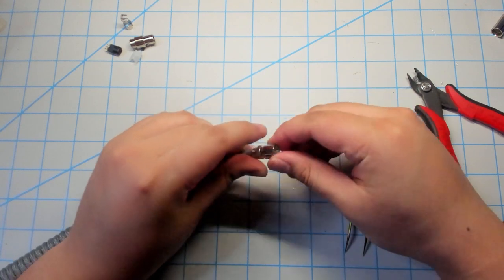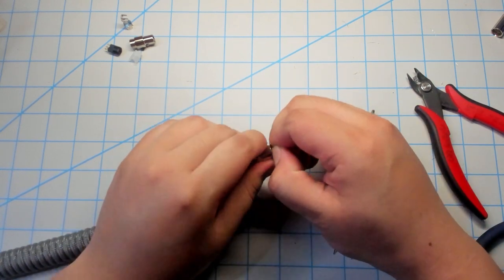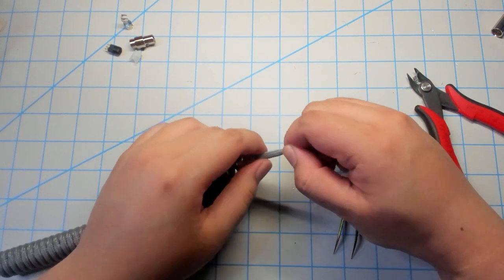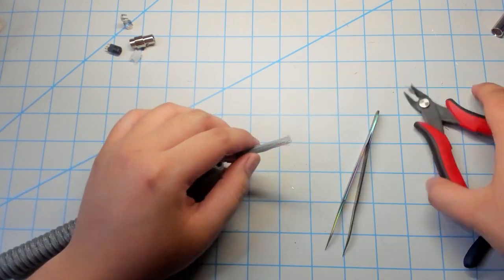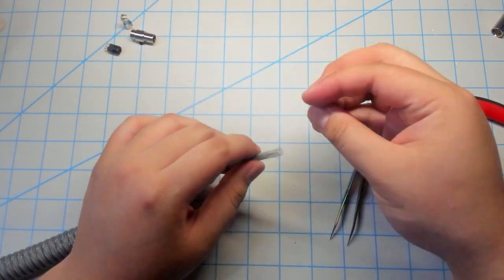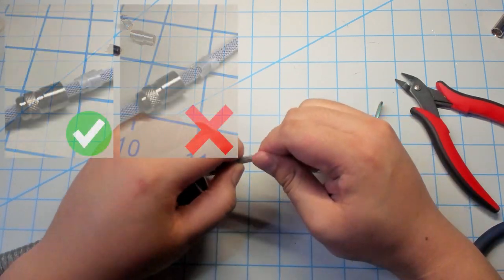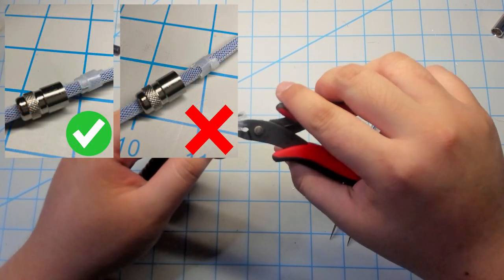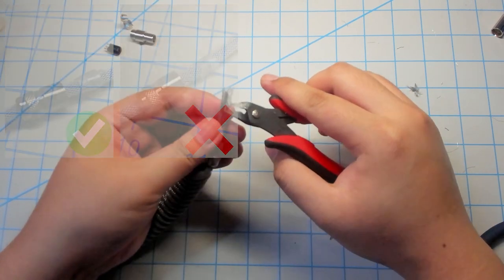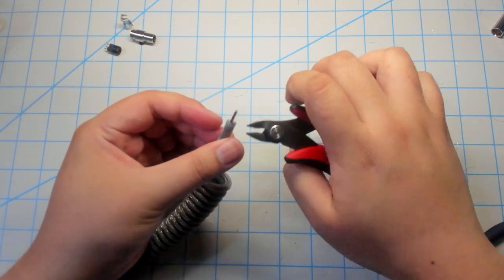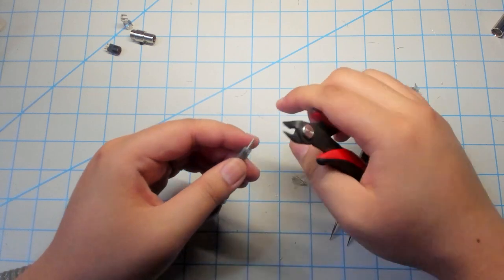Before we start soldering our connectors, I'm going to go ahead and repeat the process of adding the connector end and plastic cover to the device end of my cable. I realized after filming this clip that I added the plastic cover the wrong way, it was a huge hassle to disassemble so I would make sure to get it right the first time. Aside from that minor setback, I'll go ahead and continue as normal in prepping the cable for soldering.